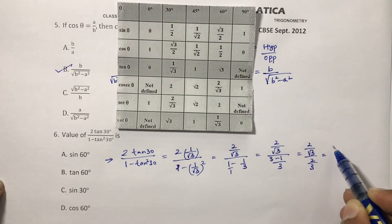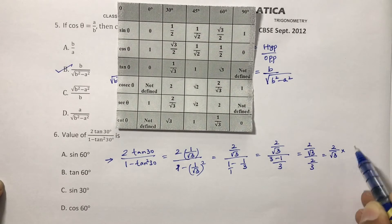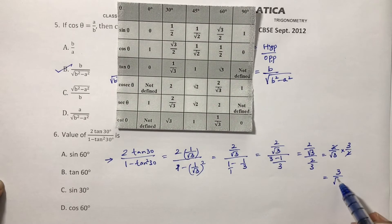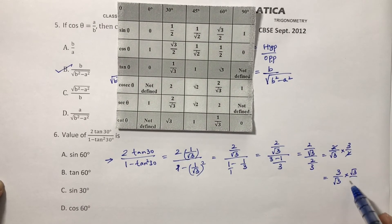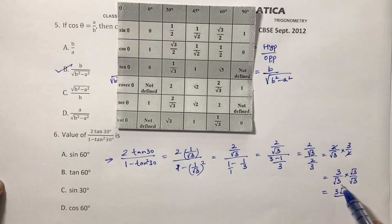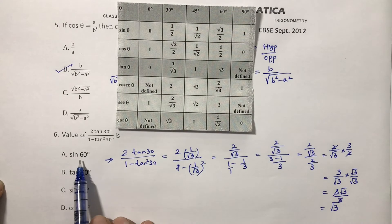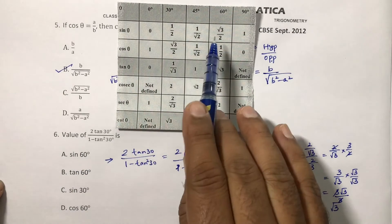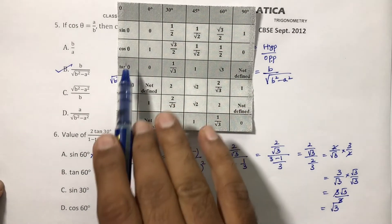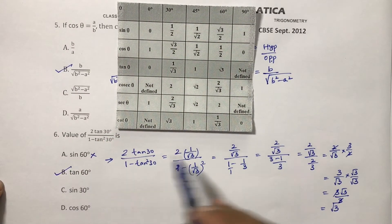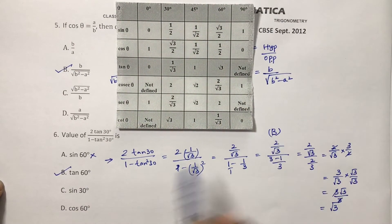Simplify further: 2 by root 3 over 2 by 3. Take the reciprocal: 2 by root 3 times 3 by 2. The 2s cancel, leaving 3 by root 3. Rationalize by multiplying root 3 by root 3: you get 3 root 3 by 3, the 3s cancel, leaving root 3. Tan 60 is root 3, so the correct answer is B, which is tan 60.